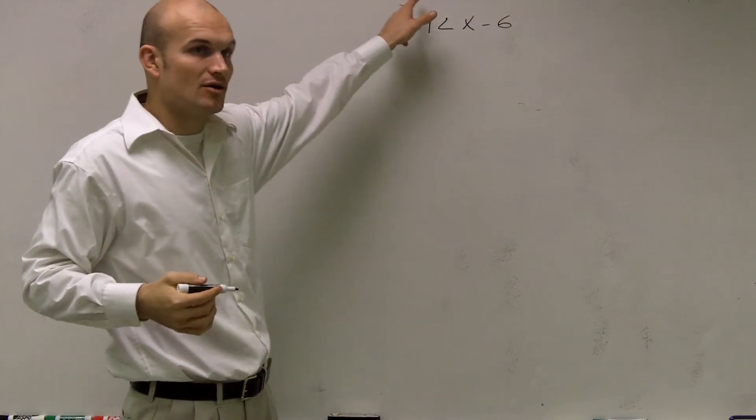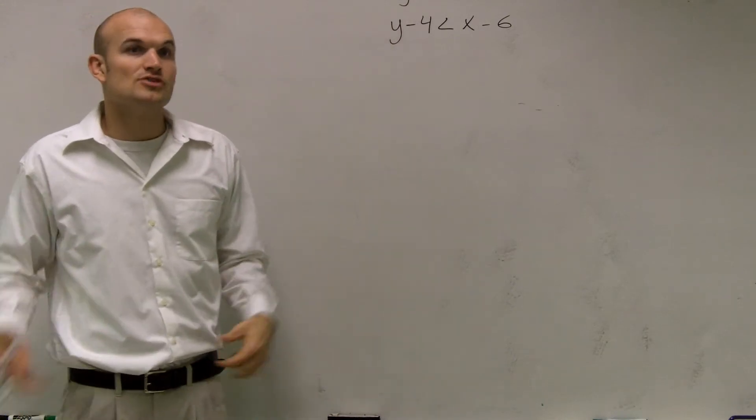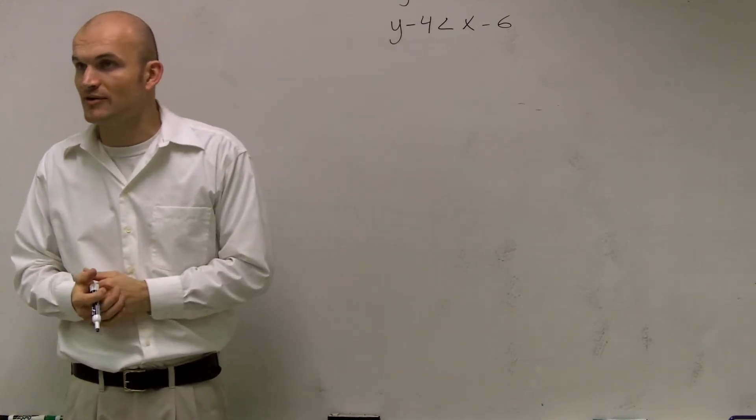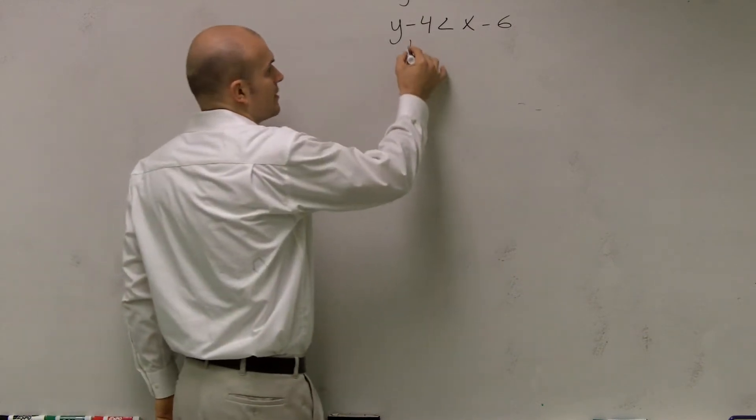So right now we need to get our y by itself, where our y is being subtracted by 4. So we need to undo subtraction by 4. So to undo subtraction by 4, we have to add 4.